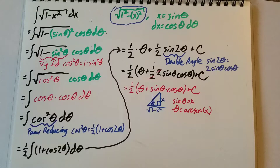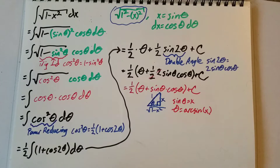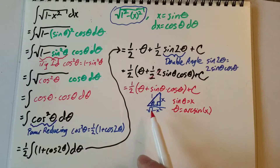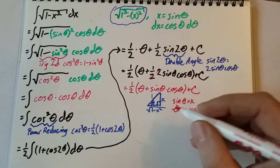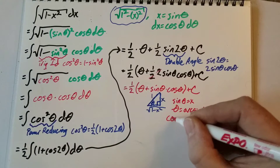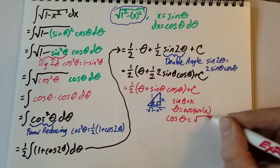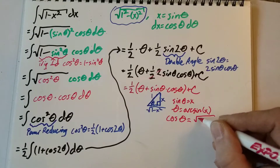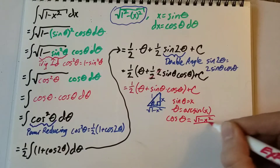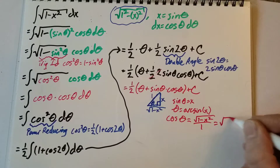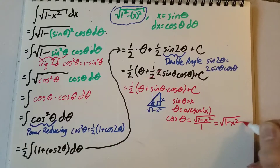Now we need to find cosine of theta. We know x equals sine theta, but now we need cosine of theta. Looking at the triangle, cosine of theta equals the square root of 1 minus x squared over 1, which is just the square root of 1 minus x squared.